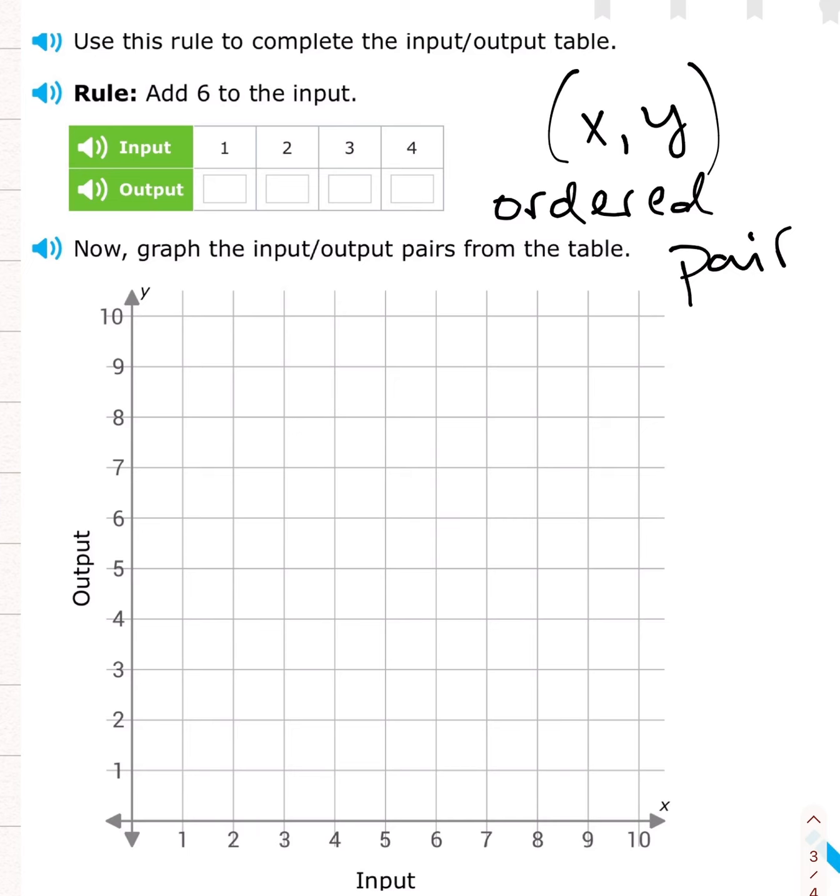The next thing we're going to do is we're going to fill out this table here. And we're going to use a rule to fill it out. So the rule is up here. The rule is add 6 to the input.